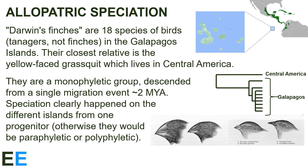A famous example of allopatric speciation comes from Darwin's finches — 18 species of birds that are actually tanagers, not finches, in the Galápagos Islands. Their closest relative is the yellow-faced grassquit, which lives in Central America. When we make a phylogeny for them, they're a monophyletic group descended from a single migration event about two million years ago. Across the islands there are a number of different species with a variety of morphologies and lifestyles, including one vampire species, yet they're all more closely related to one another than to any species outside the Galápagos. Speciation therefore seems to have happened on the different islands after a single immigration event; otherwise the finch species would be paraphyletic or polyphyletic, since multiple migration events would result in some later-arriving species being more closely related to the mainland than the finches already there.